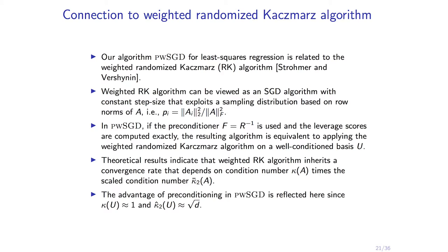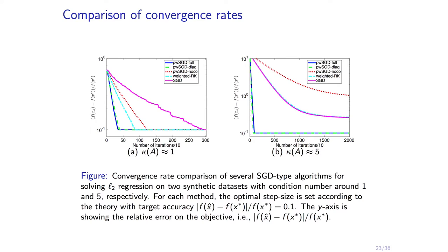Connection with randomized Kaczmarz: Strohmer and Vershynin had results with a randomized version using row length sampling. Here, if you use as preconditioner the inverse of the matrix R relating the input matrix A to the well-conditioned basis U, and the leverage scores are computed exactly or approximately, what you get is randomized Kaczmarz applied to the well-conditioned basis.